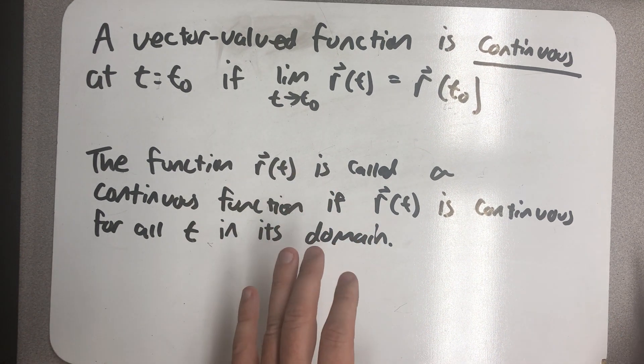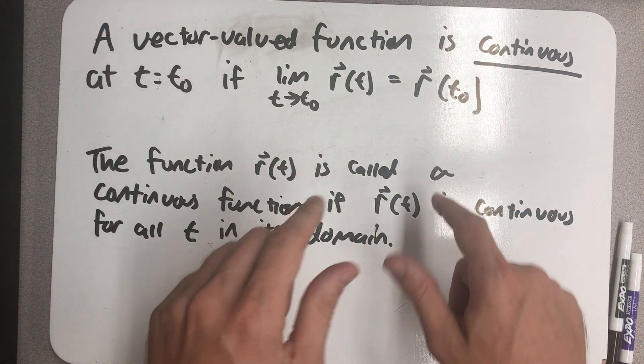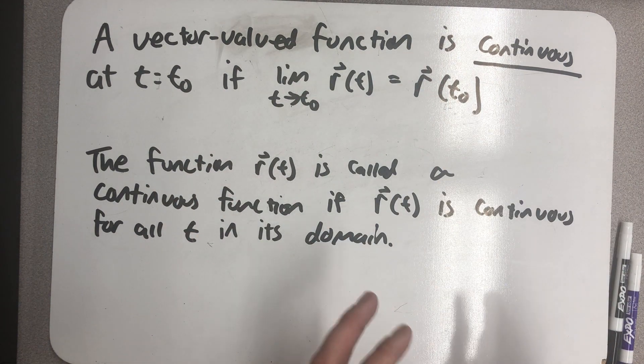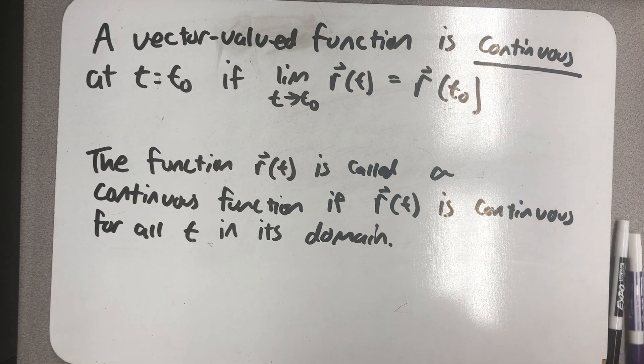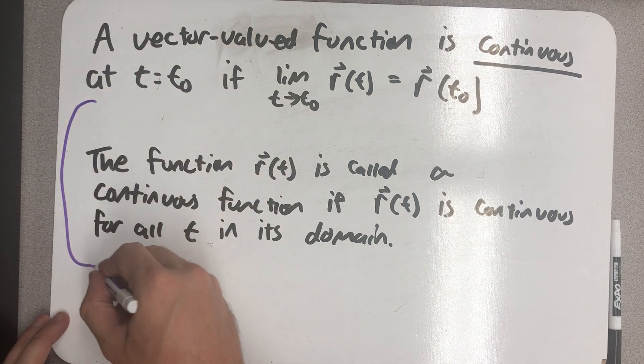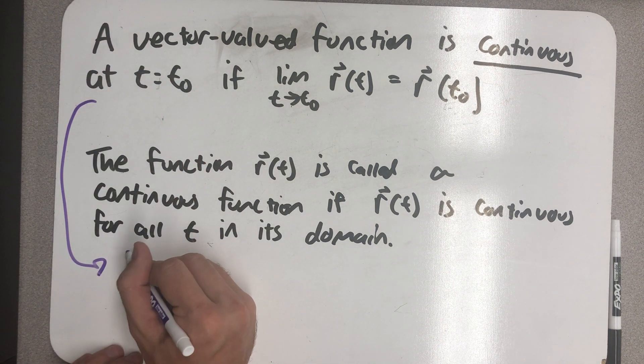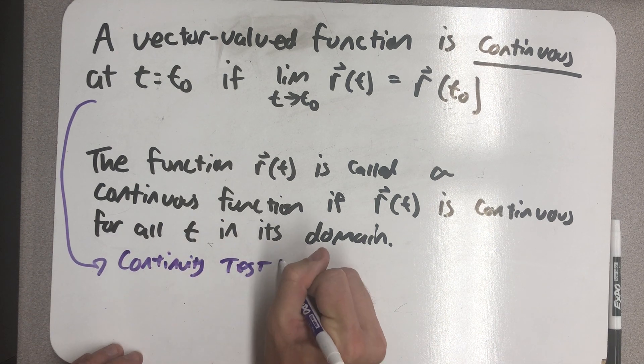It actually is saying that for the vector function to be continuous at t-naught, all three of my scalar functions also have to be continuous at t-naught. Which means that to think about continuity, we could remember the continuity test and apply it to vector functions.